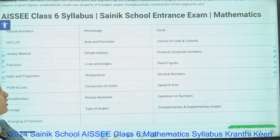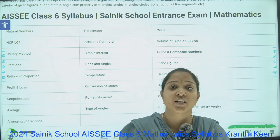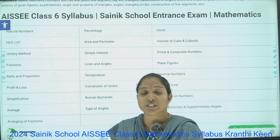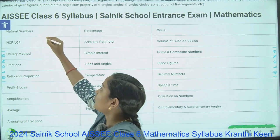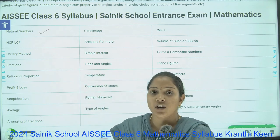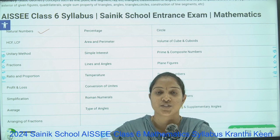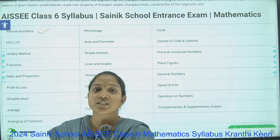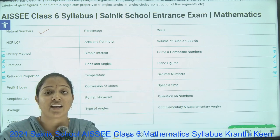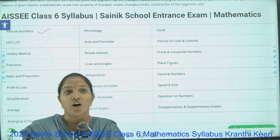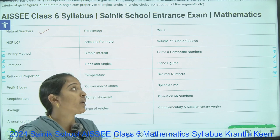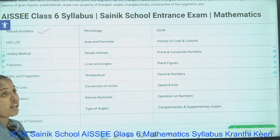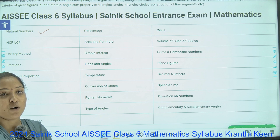You can see here the topics involved in Mathematics. These are not only for Sainik, but also for Navodaya and RMS — the topics remain the same for all three exams. The first topic is Natural Numbers, which we usually call the Number System. In this topic we will discuss what types of numbers there are, like even, prime, and composite numbers. This is the most weighted topic in Mathematics.